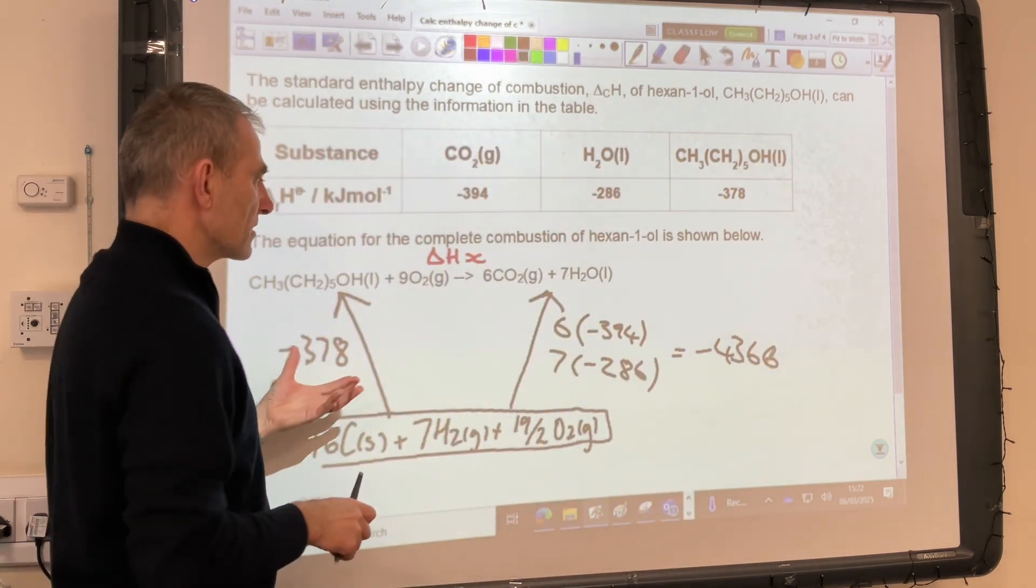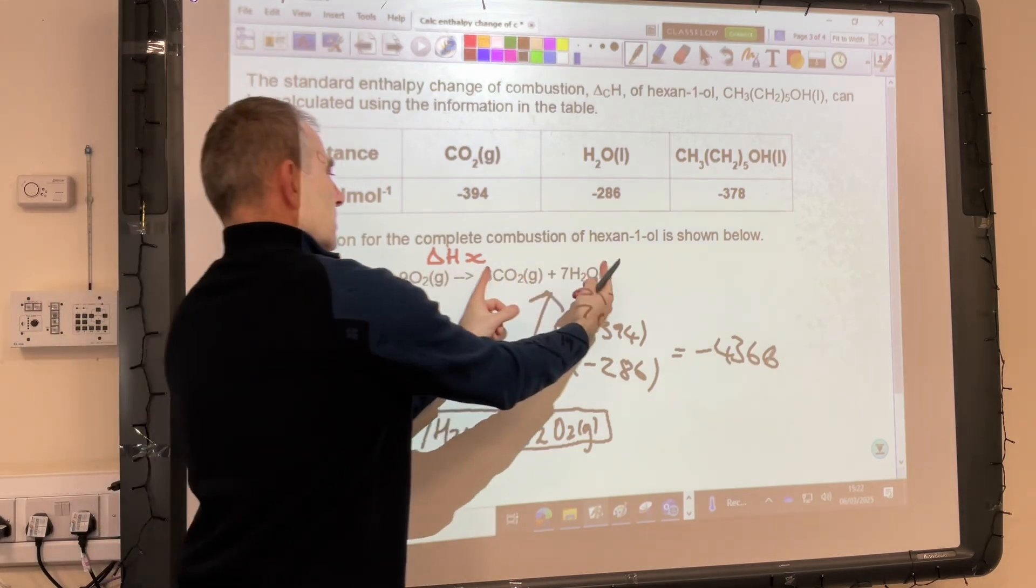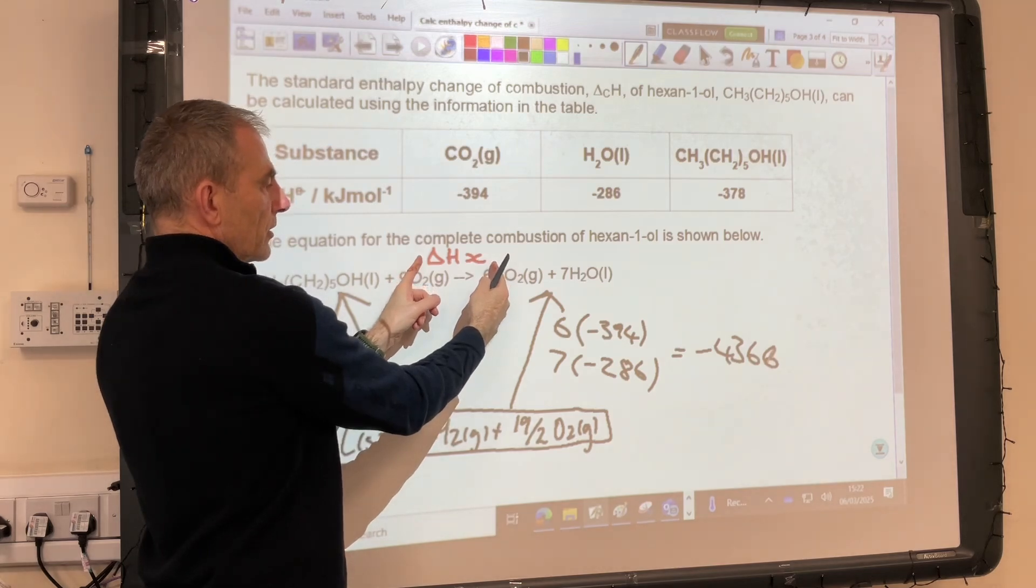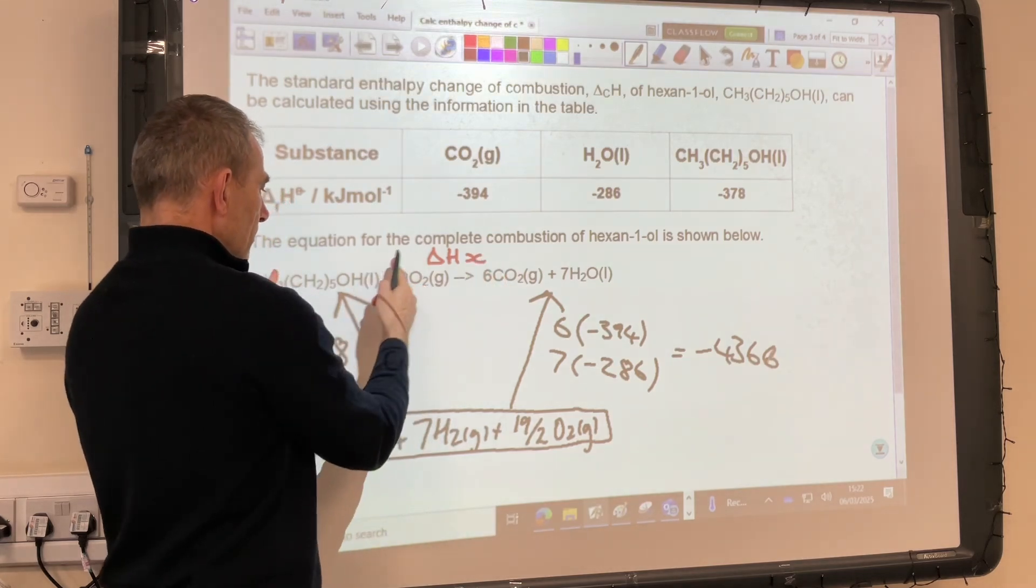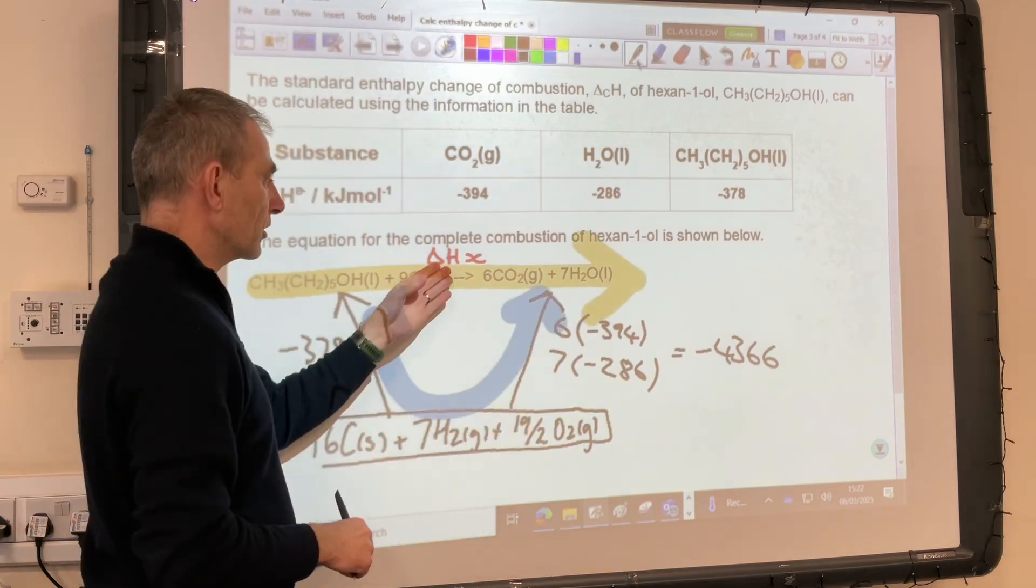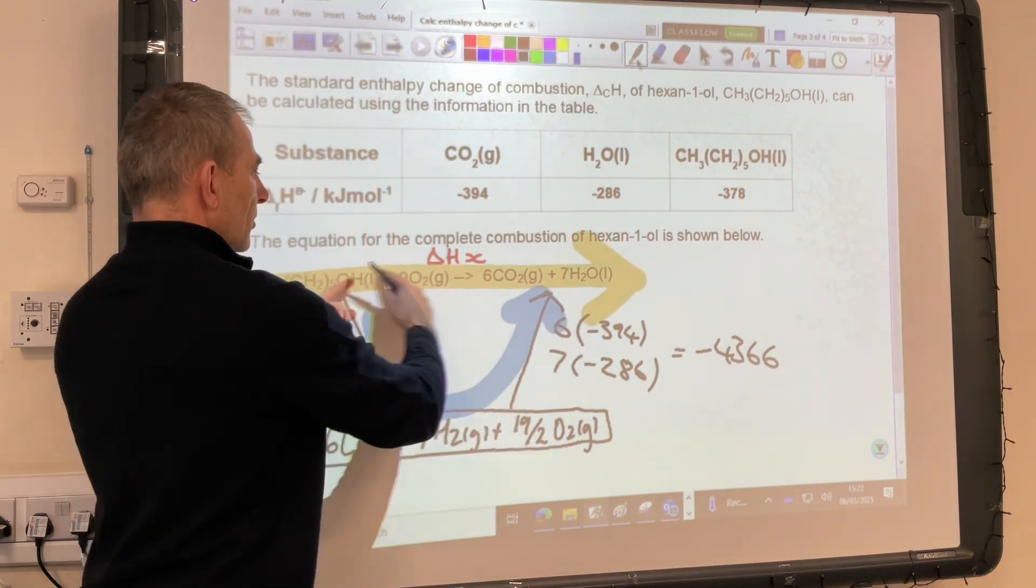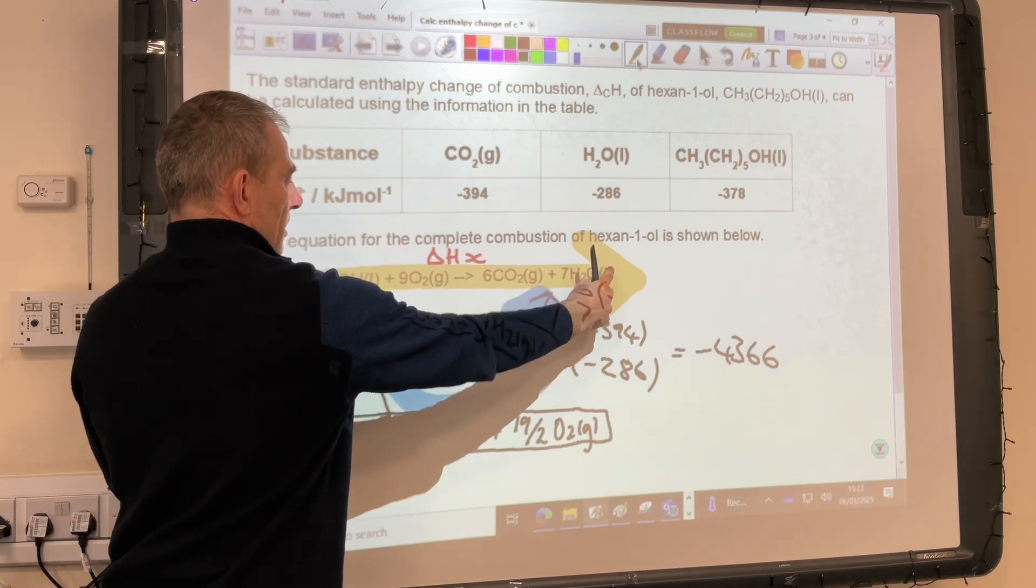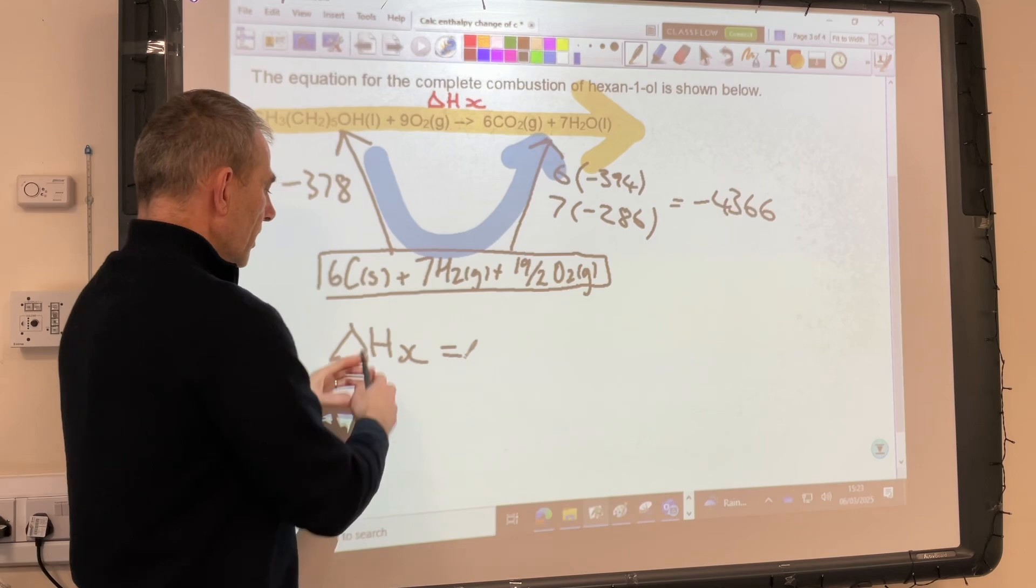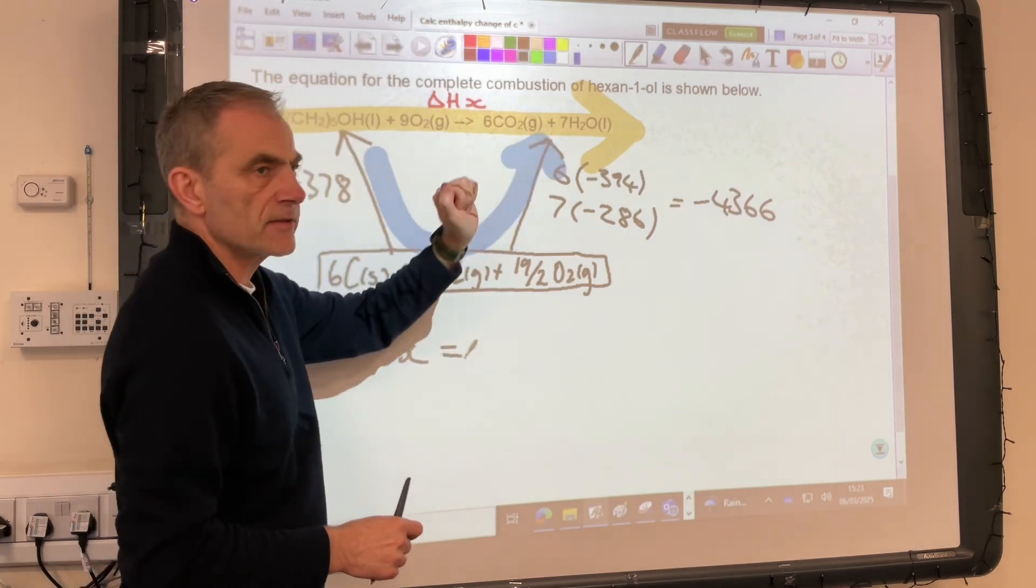So now we need to bring in Hess's law. So we've got two routes to go effectively from here to here. We can go this way, which has this unknown enthalpy change. We can also go down here and then up here. So I've just color coded this route orange, this route blue. Hess's law says the sum of the enthalpy changes in this route has to equal the sum of the enthalpy changes in the other route. So delta Hx is going to equal the sum of the enthalpy changes in this blue route.